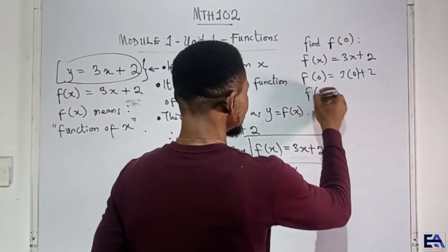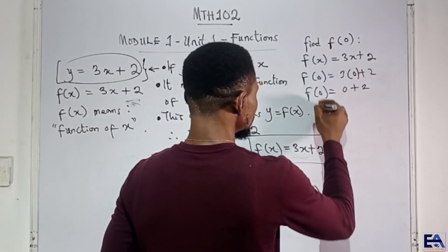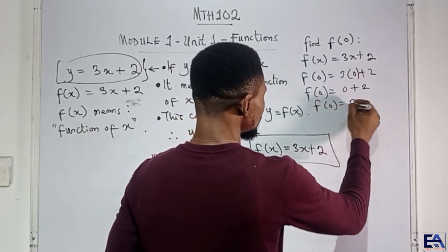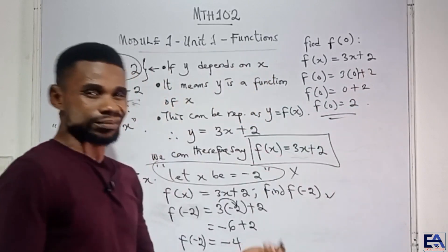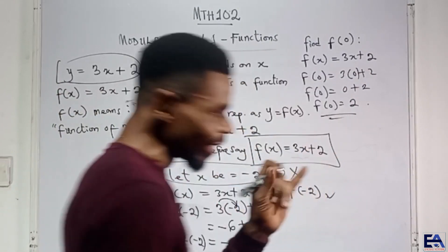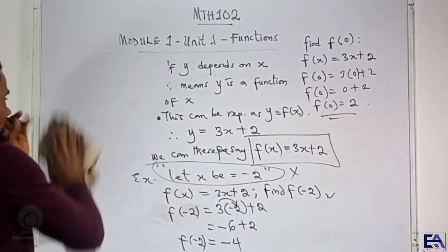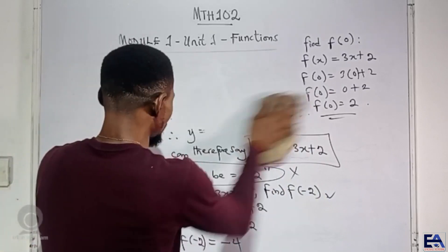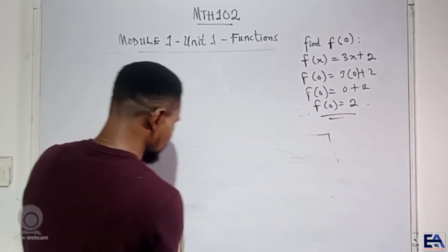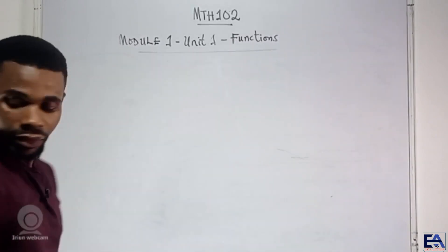So in that case, f of 0 is equal to 3 times 0 is 0, plus 2. So that's 2, and that's the answer. It's just as simple as that. Now, let us just play with something a little bit technical. Just small, just a small thing. Don't be afraid. It's quite easy. You just follow me up.